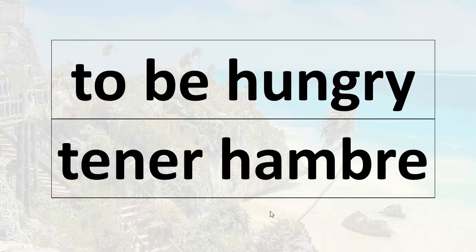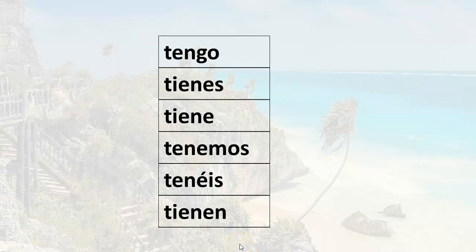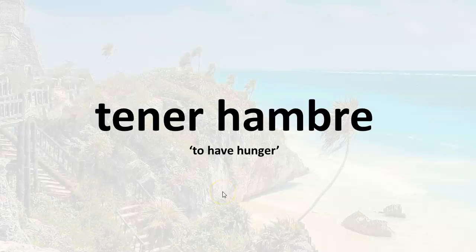So to be hungry is tener hambre. Notice the H is silent — hambre. You'll need to know your forms of the verb TENER in the present tense to be able to use TENER expressions. Tener hambre literally means to have hunger — hambre means hunger — but of course the expression tener hambre means to be hungry.